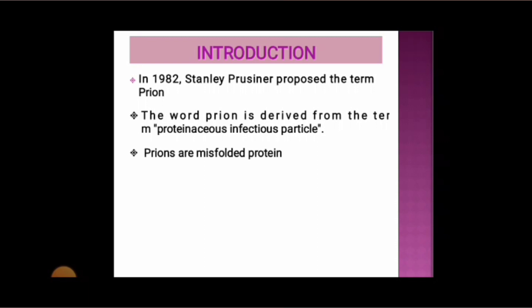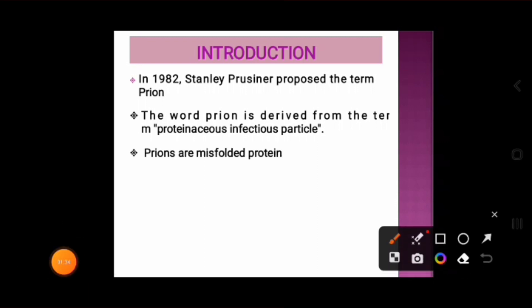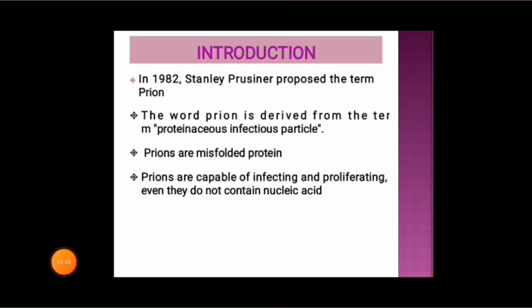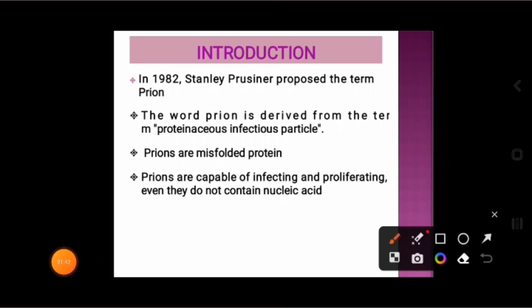Prions are misfolded proteins — this protein is in a misfolded conformation. The interesting feature of prions is that even though they do not contain any nucleic acid, they are capable of infecting and proliferating. This is in contrast to other infectious agents — viruses, bacteria, protozoa and other parasites — which contain nucleic acid, either DNA or RNA as genetic material. But prions do not contain any nucleic acid; they only consist of protein, and this protein is misfolded.